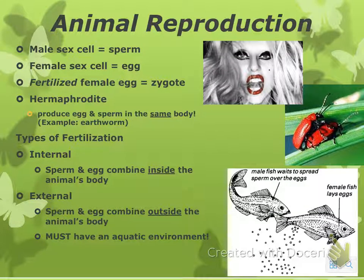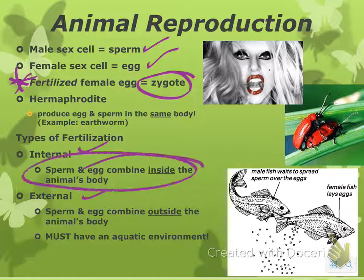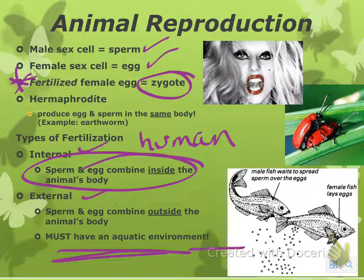So animal reproduction: the male sex cell is a sperm, the female is an egg. A fertilized female egg is a zygote. A hermaphrodite produces egg and sperm in the same body. There are two types of fertilization: internal and external. Internal is combining inside the body — this is something like a human. External is when they combine outside the body, and they must have an aquatic environment. Fish, for example — the female lays all her eggs, the male drops his sperm on the eggs, and they fertilize outside the body.